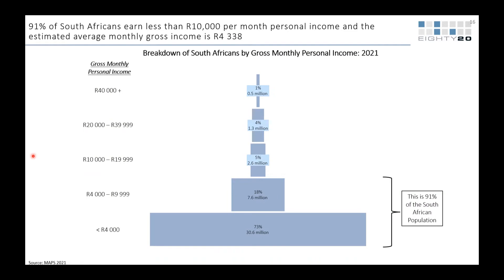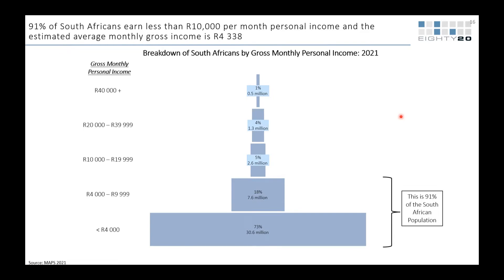Follow-up question: is there some weighting based on population of the different provinces? Yes — the sampling is based on a combination of age, race, marital status, gender, province, and a couple of other variables.